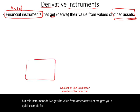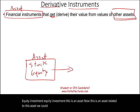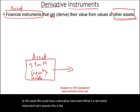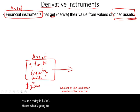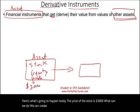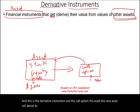Let's talk about an equity investment — stock. An equity investment is an asset, and related to this asset we can have a derivative instrument. For example, let's take Google stock, priced at $3,000 today. We can create another instrument called a call option, and this call option will derive its value from the price of Google's stock.